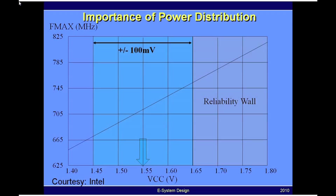On the high side, you are less than the reliability wall. But on the low side, you go down to 1.45 volts — which is 1.55 volts minus 100 millivolts. When a company like Intel specs their microprocessor, they will always spec fmax for this processor at the frequency corresponding to 1.45 volts, which in this case is 665 megahertz.